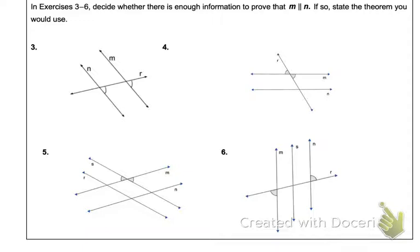Same goes for down here. The question is in the exercises, decide whether there's enough information to decide that M and N are parallel. So make sure you're paying attention to the fact that we're talking about line N and line M, especially the ones that have more than one, two, or two lines that look parallel.